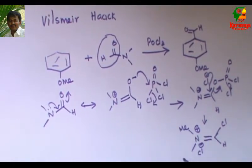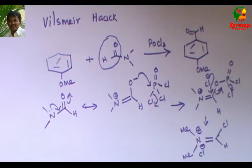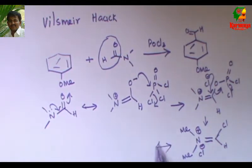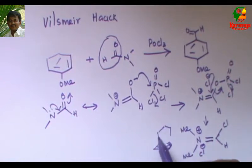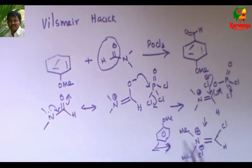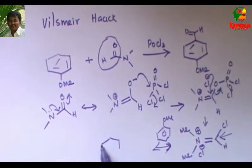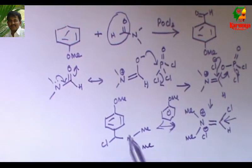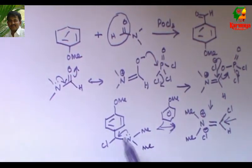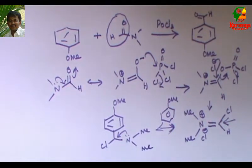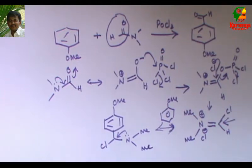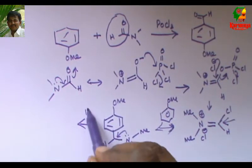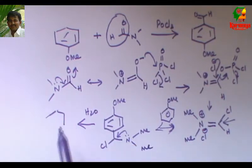Afterwards, Cl- displaces this group to give the next intermediate — this is the iminium ion. So this is the second intermediate. This iminium ion is attacked by the nucleophile — in our case it is the aromatic compound (anisole). It attacks this portion. Further, since chlorine and nitrogen are on the same carbon, they undergo elimination to give the iminium.